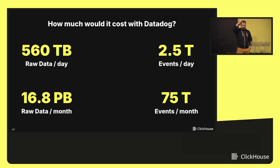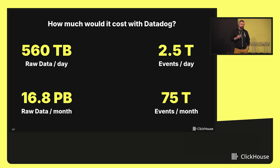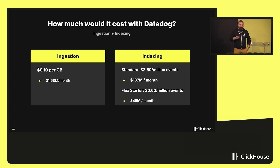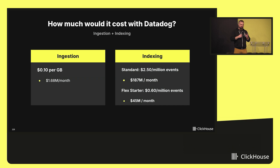How much would it cost with Datadog? Datadog's pricing model is complicated, but let's evaluate it. We're doing 560 terabytes per day, 2.5 trillion events per day — that adds up to roughly 17 petabytes per month and about 75 trillion stored events per month. Datadog charges separately for ingestion and indexing. Even looking at just ingestion — 16 petabytes of raw data at 10 cents per gigabyte ingested — that's going to be a lot of money, and we haven't even started with indexing. It's a ridiculous amount of money, and it was pretty obvious we should not go that path. That's why we built LogHouse — it ultimately costs us just a fraction of that.